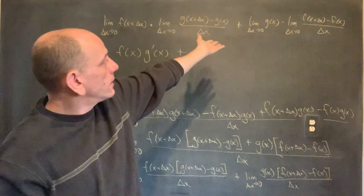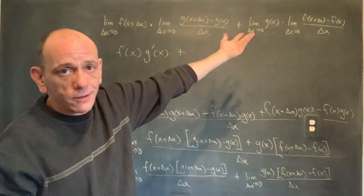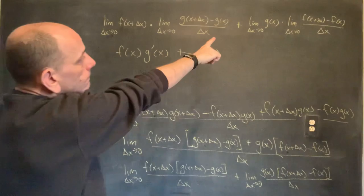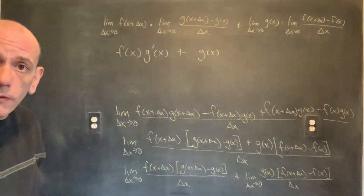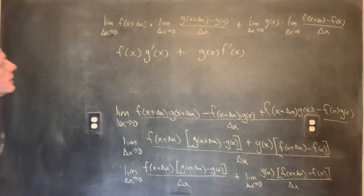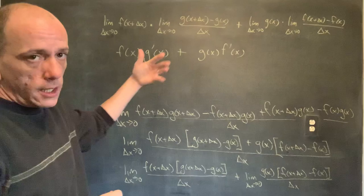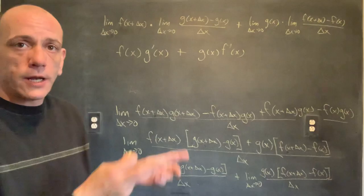g(x) doesn't care about delta x — it doesn't have delta x in it, so that's essentially the limit of a constant. Delta x is going to zero, but g(x) doesn't care about it; it's just g(x). And that second piece — f(x + Δx) minus f(x) over delta x — that is the derivative of f. Now, it doesn't matter here because addition is commutative, but subtraction is not. So we'll find in the quotient rule the order does matter; in the product rule it's a sum, so the order doesn't matter.